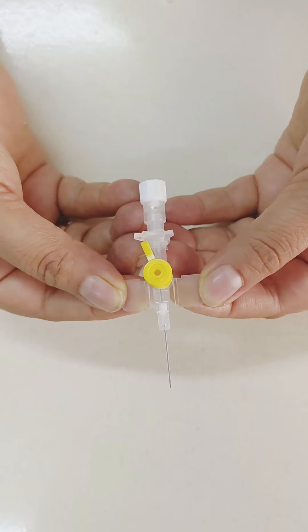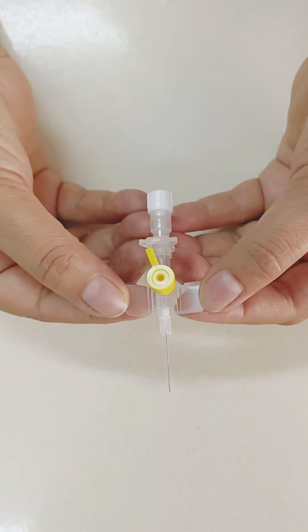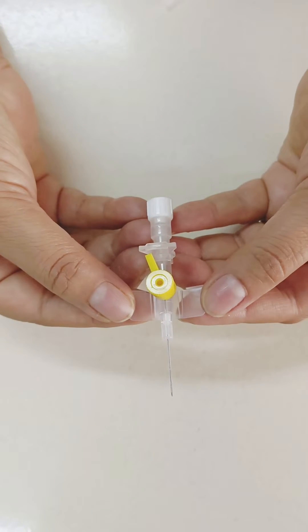These are catheter wings. It helps to fix the intracath.